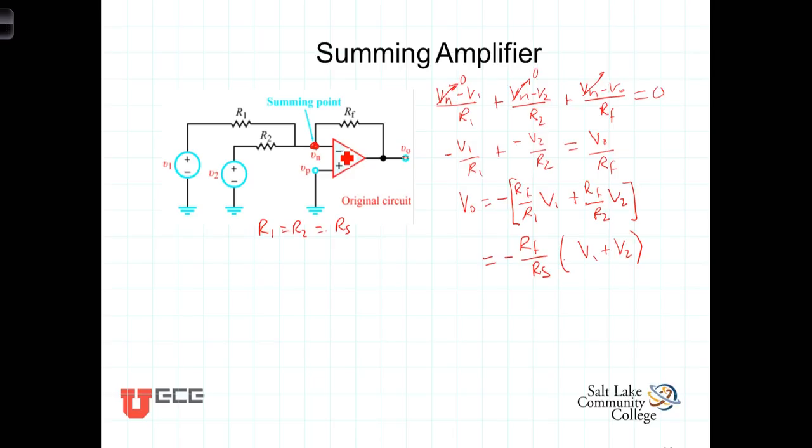With R1 equaling R2, both are amplified by the same amount, and we end up with a scaled version of the sum of those two. If we don't want any gain out of it, we simply make R sub f equal R1 equal R2, and then the output voltage would be just V1 plus V2.